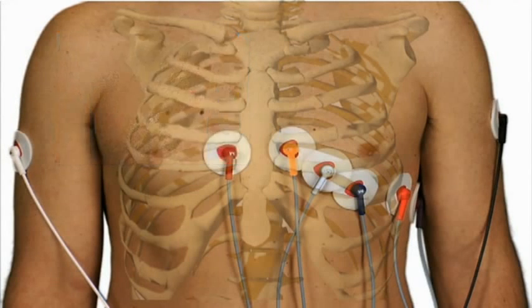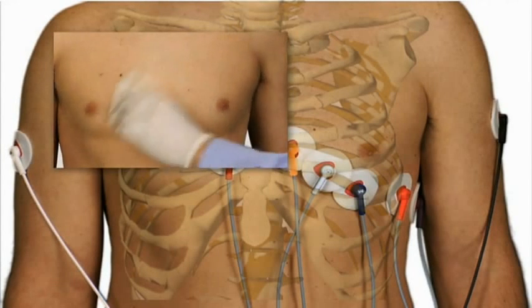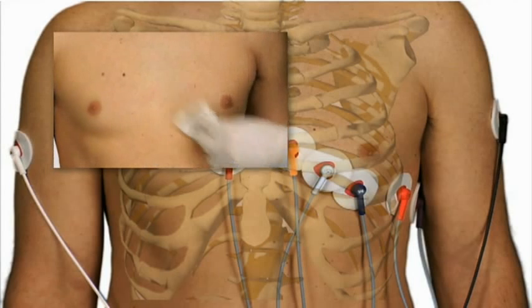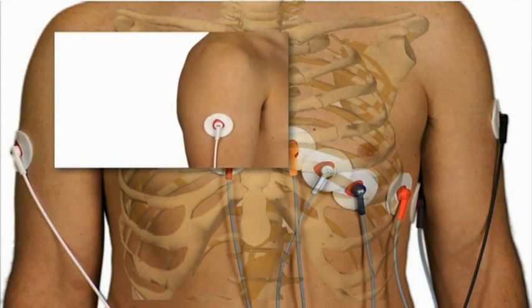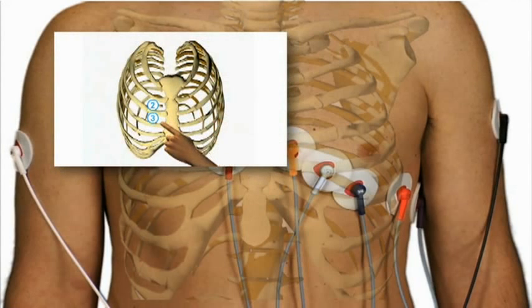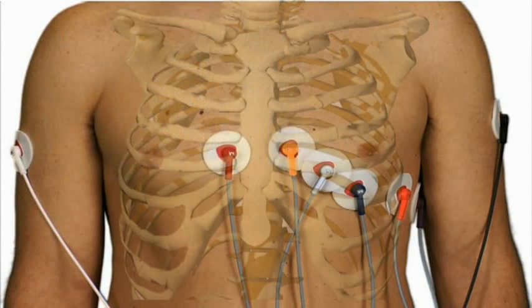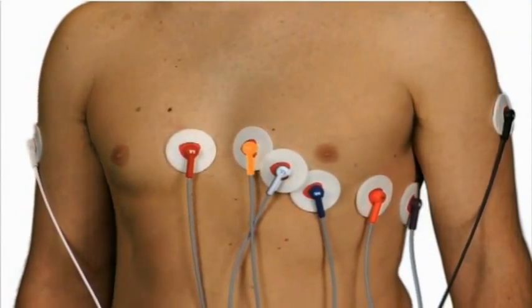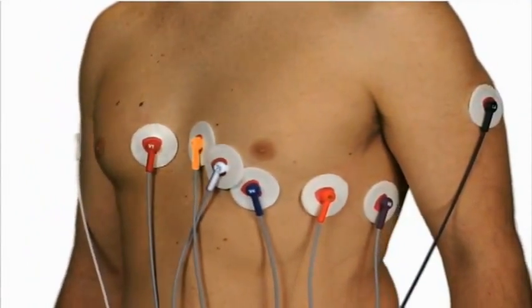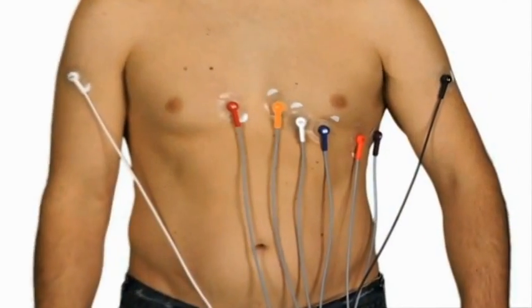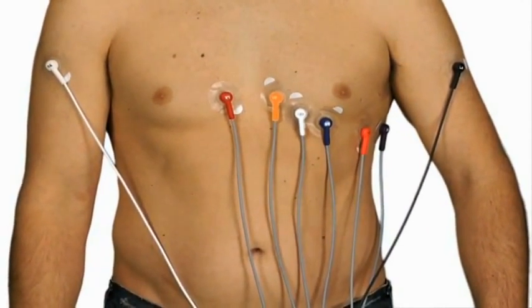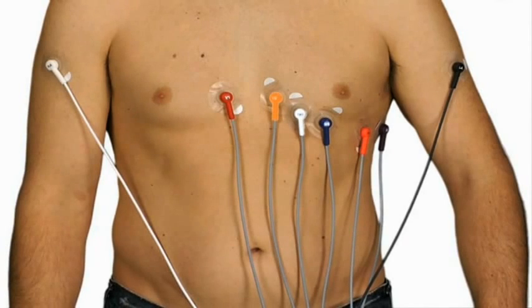Let's recap: first, remove any hair if present and prep the skin — an unsterile 4x4 works great for this purpose. Position the limb electrodes, find the 4th intercostal space, and position the chest electrodes. The style of electrode does not matter; all of them are positioned in the same exact place as shown here.